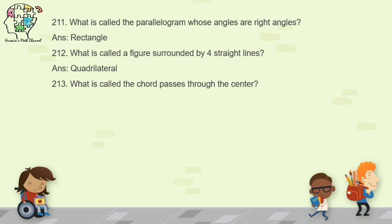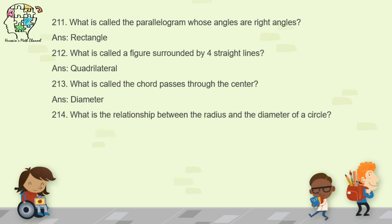Question 213: what is called the chord that passes through the center? It is the biggest chord and is called the diameter. Question 214: what is the relationship between the radius and diameter of a circle? You can write it in both ways — radius is half of the diameter, or diameter is double the radius.